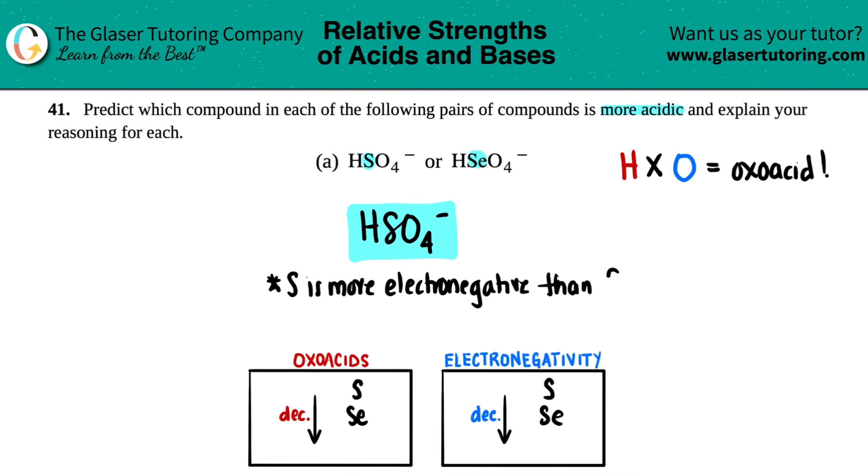The more electronegative element wants to become negative, and that's what acids do—acids always donate that hydrogen. The hydrogen goes away, making this element negative. If you're more electronegative, you're more likely to become negative faster, and the faster this hydrogen leaves, the better the acid.